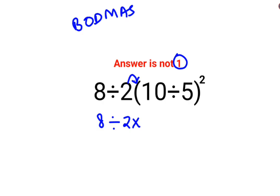10 divided by 5 is 2, 2 square. Next, first we did the brackets, then we are supposed to do the order. So we will do 8 divided by 2 multiplied by 2 square is 4.